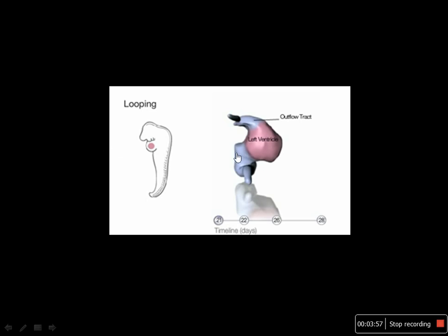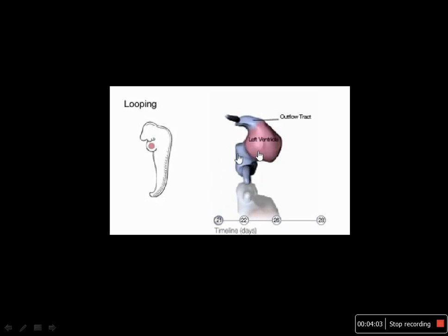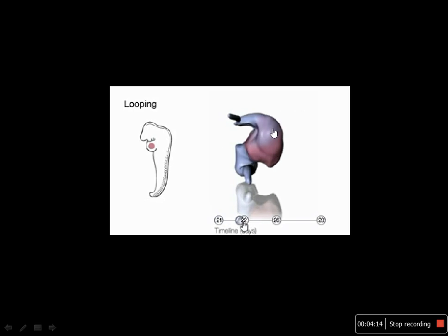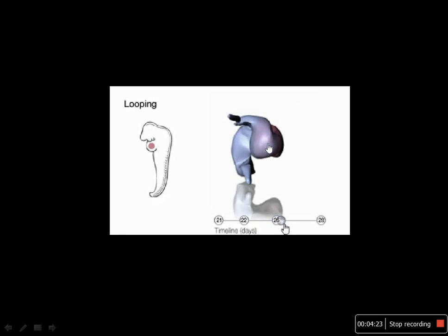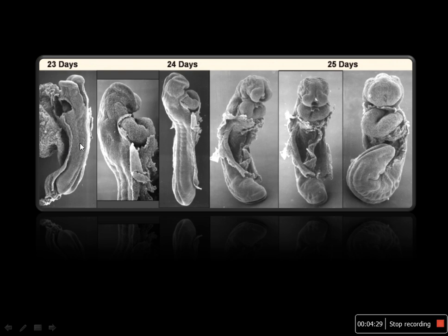Now the heart starts looping. Initially the ventricles are located above the atria. The force from the dorsal mesocardium causes the heart to loop — first into a C-shape and then into an S-shape — with gradually decreasing distance between the outflow and inflow tracts. Here are real embryo images where you can see the C-shaped and S-shaped folds; these are the ventricles.